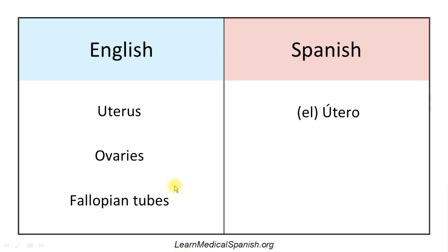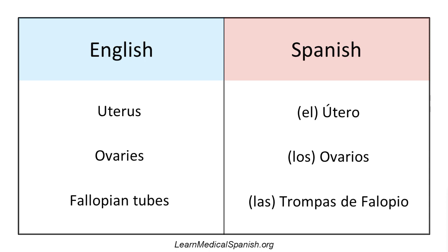Ovaries. Los ovarios. Los ovarios. Fallopian tubes — sounds kind of like trumpets. It's going to be like 'trompas' because they're trumpet-shaped, right? Las trompas de Fallopio. Las trompas de Fallopio.